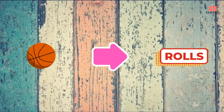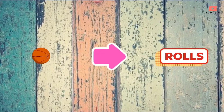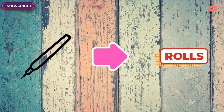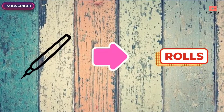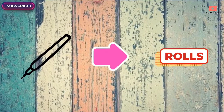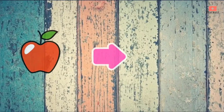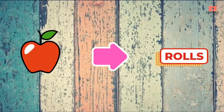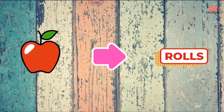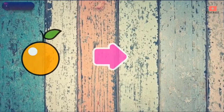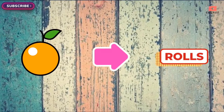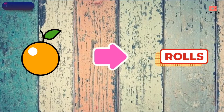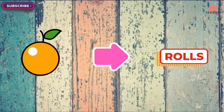This is a ball — a ball rolls. This is a pen — a pen rolls. This is an apple — an apple rolls. This is an orange — an orange rolls.